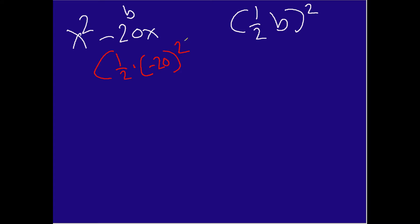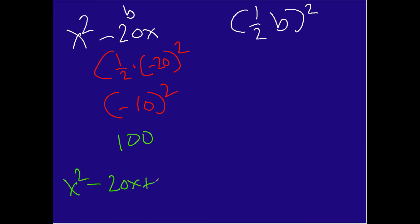One thing to mention: in order to complete the square, we have to take the binomial expression and convert it into a quadratic expression — that is, a trinomial. The reason we're taking our coefficient, our b term of negative 20, multiplying it by one half and then squaring it, is that this gives us the third term in our trinomial. So one half times negative 20 is negative 10, and negative 10 squared gives us 100. So we now have x squared minus 20x plus 100.